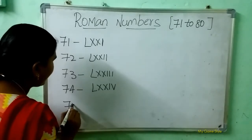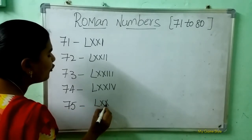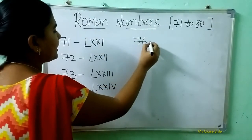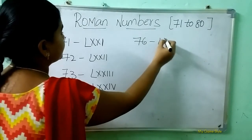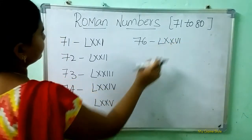75: L, double X, V. This is 75. 76: L, double X, V, I. This is 76.